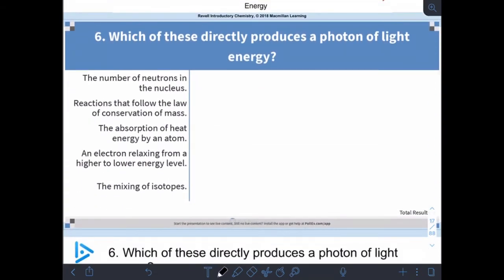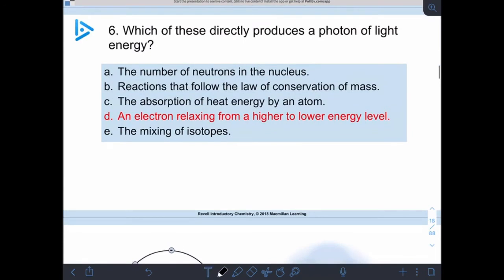Which of these directly produces a photon of light energy? Remember, photons is that release of energy. In order to have a release of energy, we have to first excite an electron. It has nothing to do with the neutrons in the nucleus, nothing to do with the electrons - we're not doing a chemical reaction so we don't care about the law of conservation of mass. The absorption of heat energy is absorption by the atom. There's our good answer: an electron relaxing from a higher energy level to a lower energy level. Mixing of isotopes doesn't cause any change in energy.